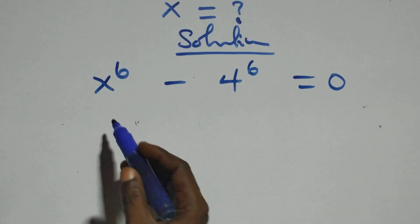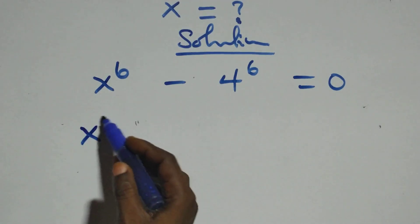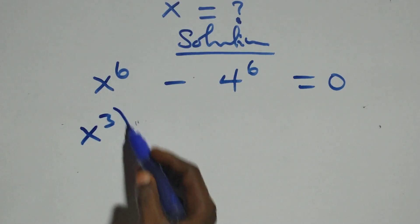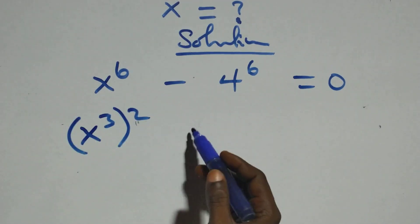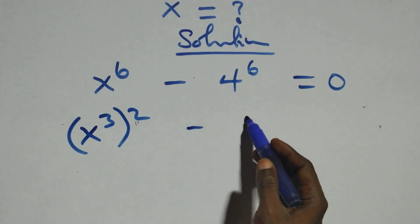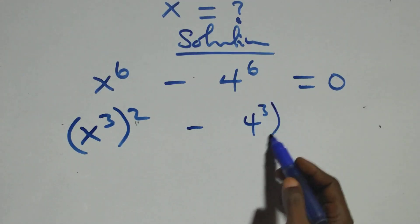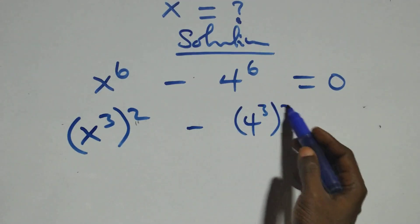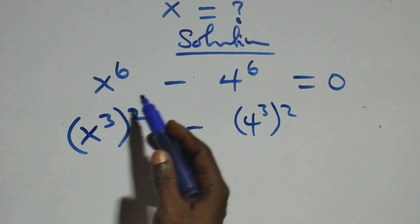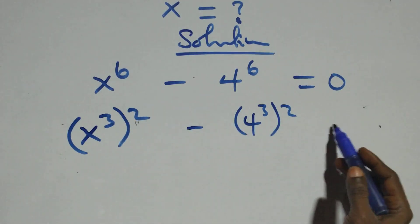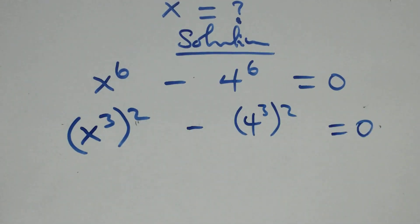At this, we can write this as x raised to the power 3, then raised to the power 2, minus 4 raised to the power 3, then raised to the power 2, since 2 times 3 equals 6, and equals to 0.